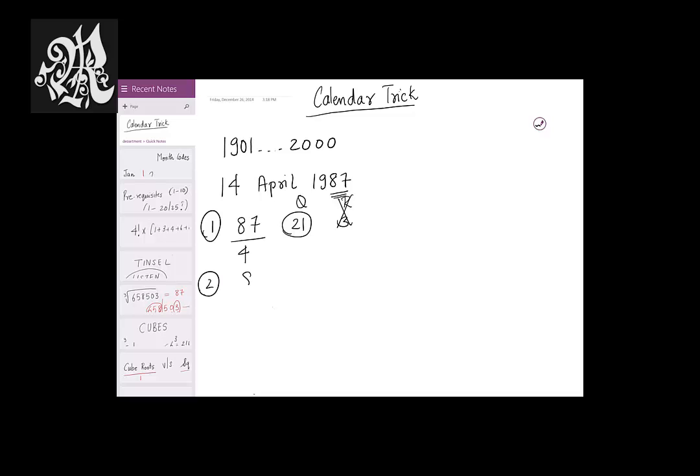Step 2. Add the year and the quotient that you get. So 87 is the year and the quotient is 21. I add both of them, I get 108. Divide this by 7 and trace the remainder down. The remainder comes to 3. Because 7, 15 is 105, so you have a remainder of 3.